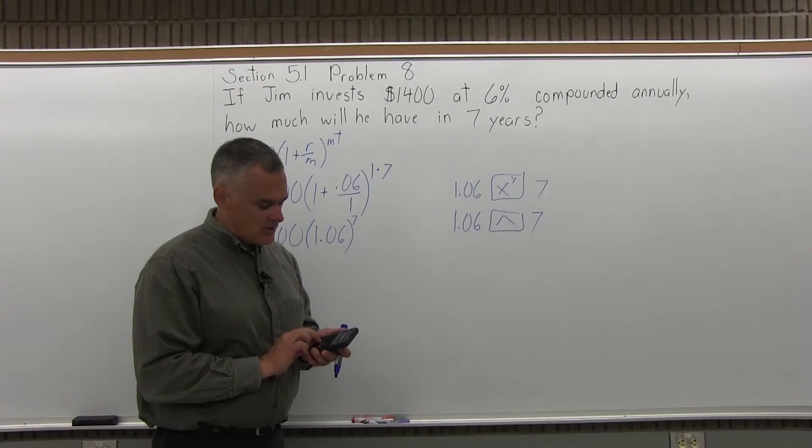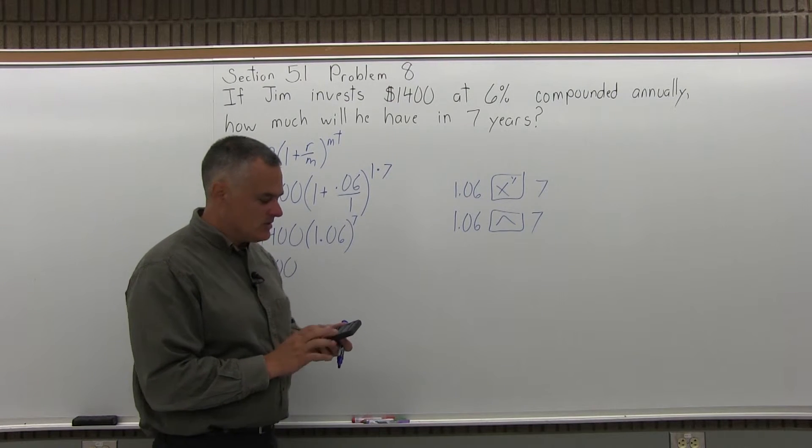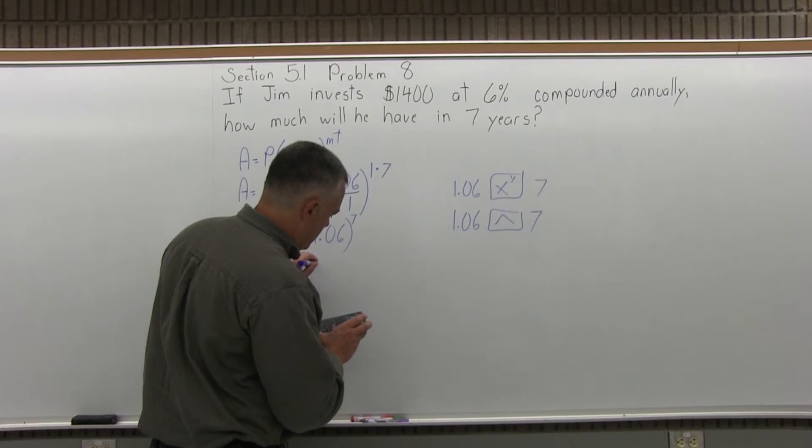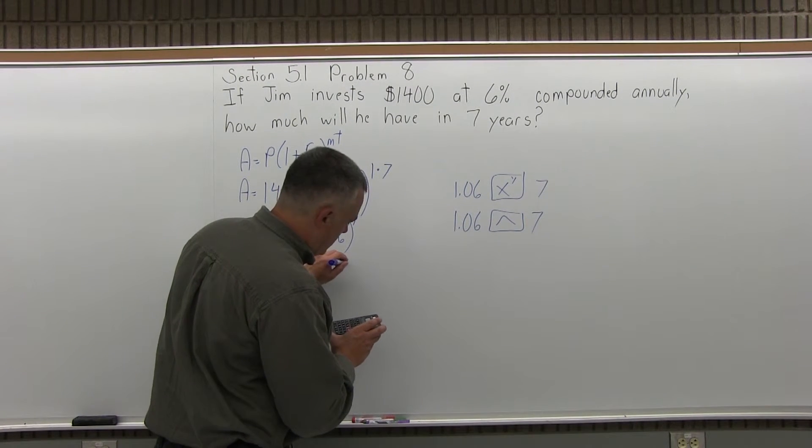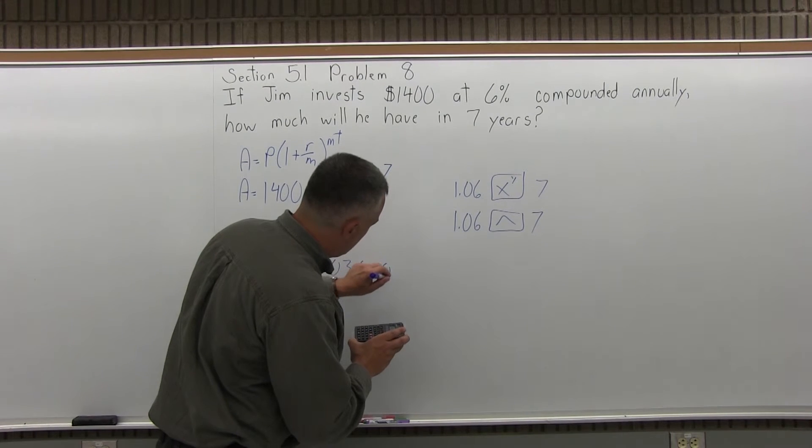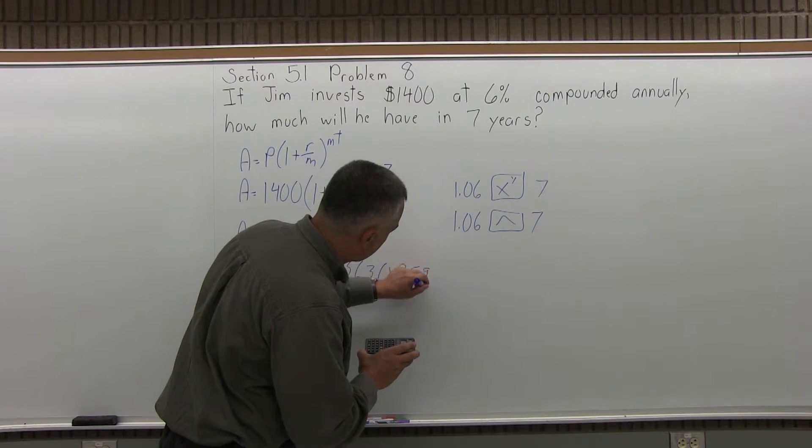On my calculator, 1.06, exponent button, 7 equals, and the answer I get is 1.503630259.